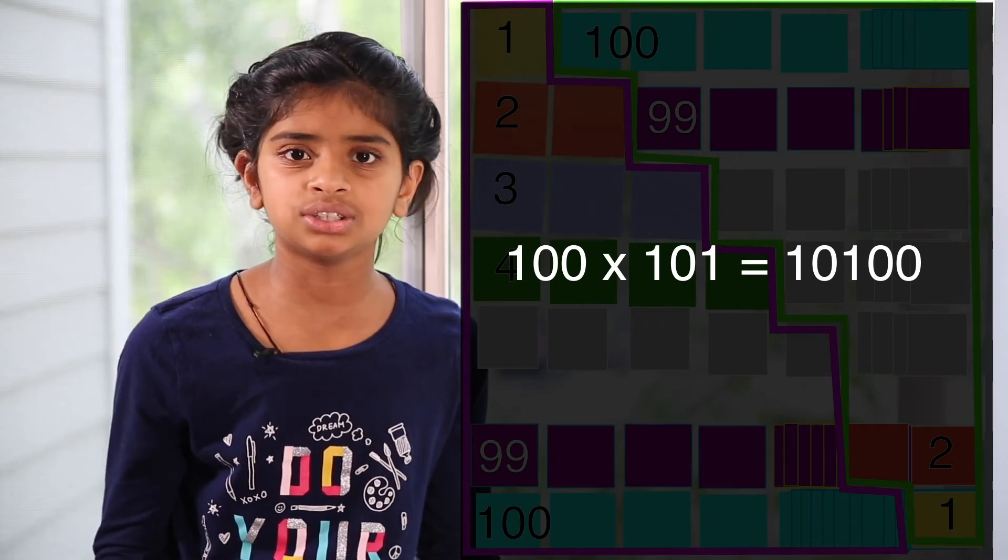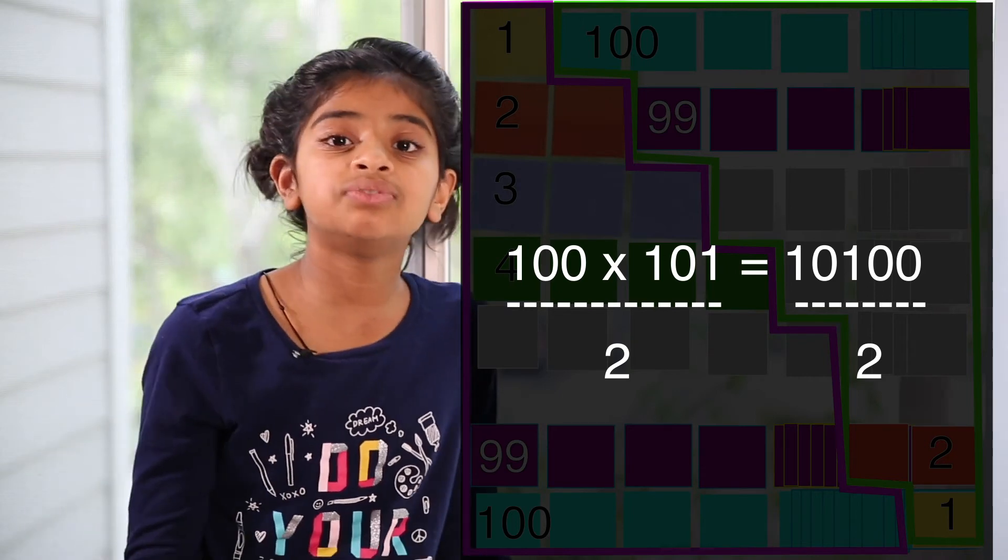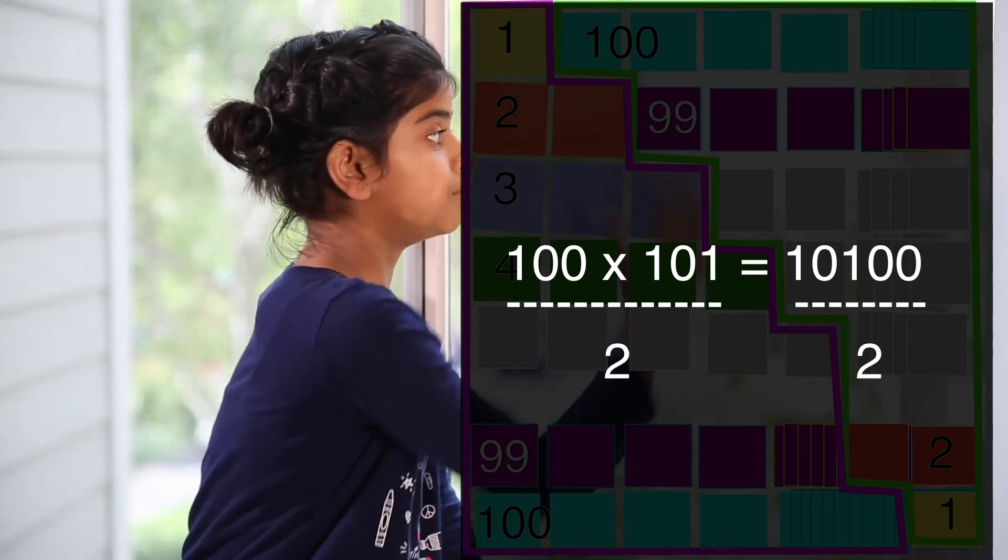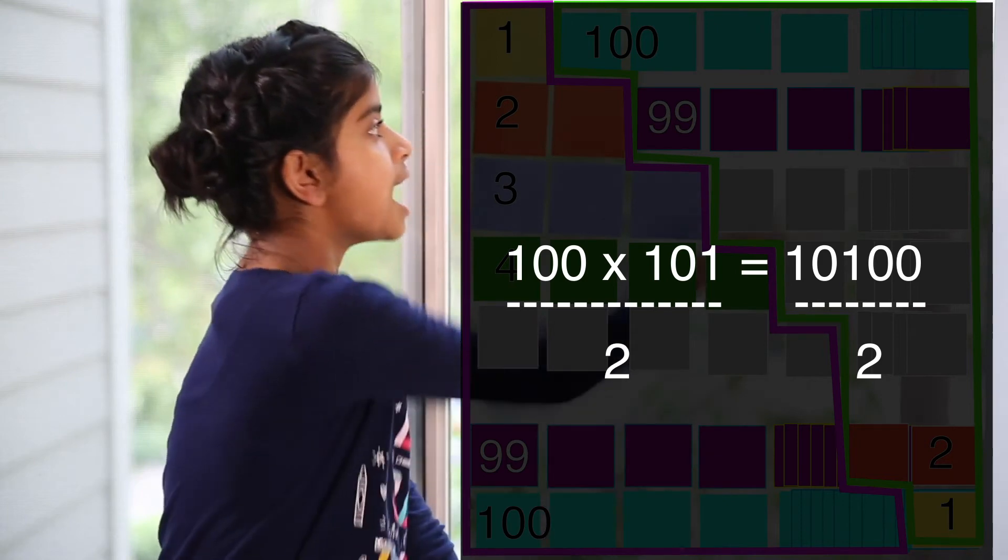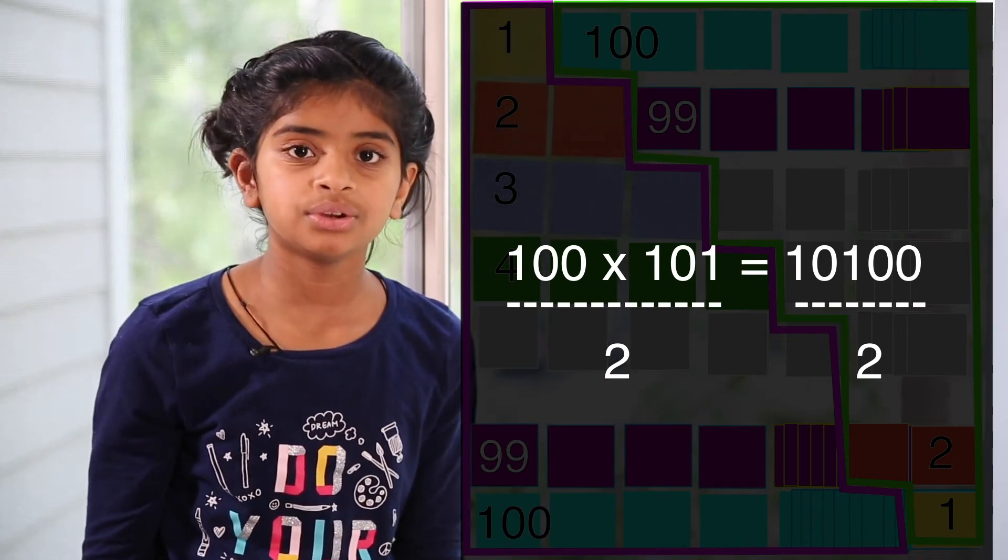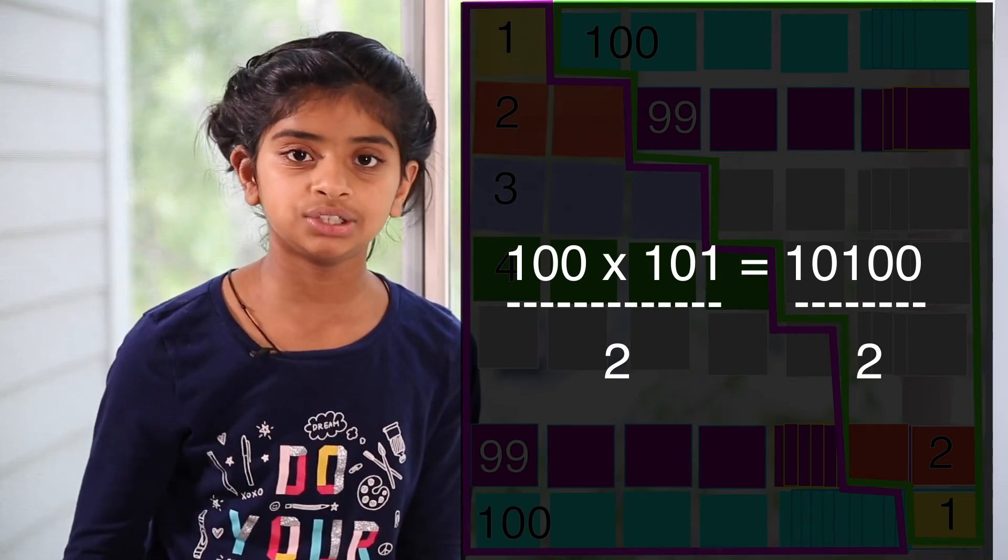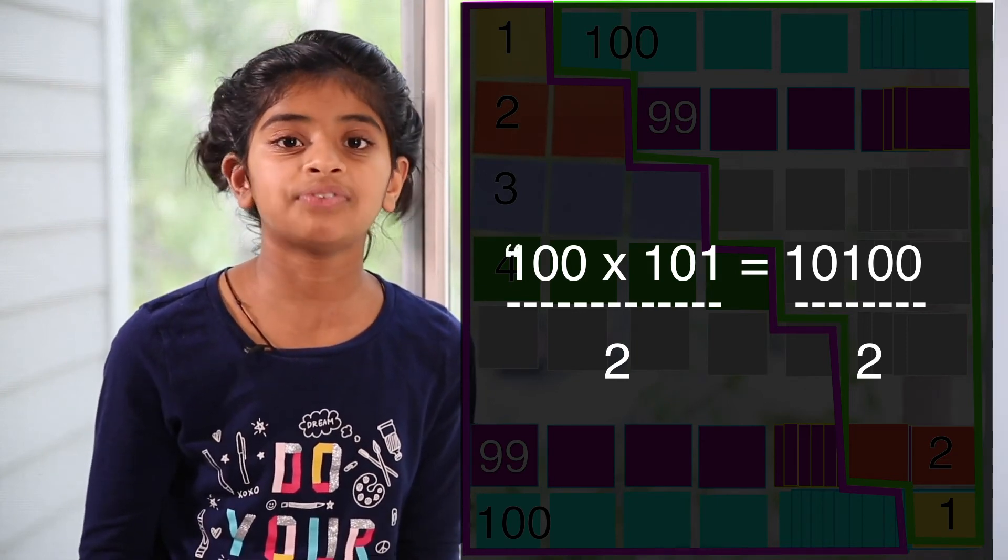Wait, but that's not the answer. We need to remember rule number 2, which is in the end you need to divide it by 2 because in the beginning you multiplied it, you copied it, and put it to the original shape. So what we're going to do is we're going to do 10,100 divided by 2, which is very easy. It's 5,050.